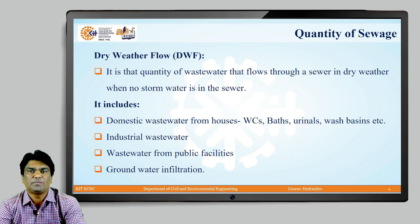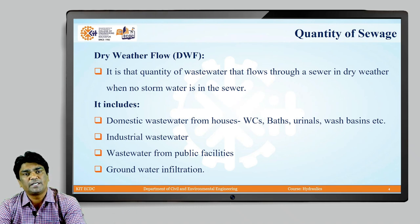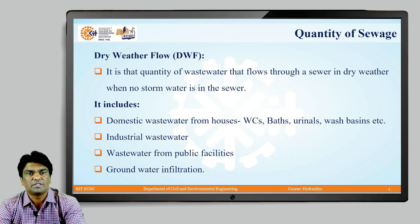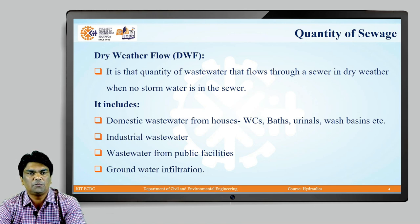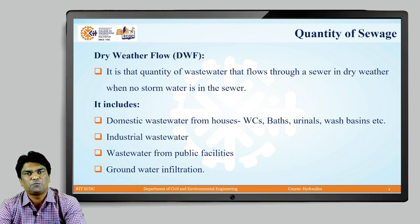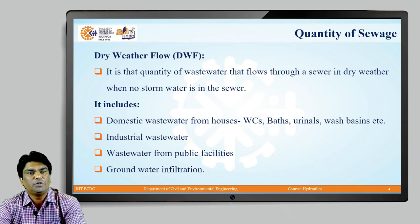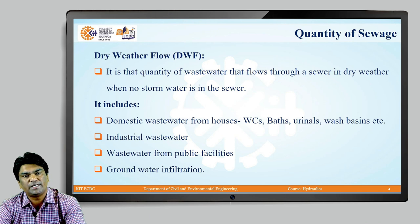Moving to the next part, let us discuss the quantity of sewage — how to quantify it. Sewage is nothing but waste water generated from various sources, and it also includes infiltrated groundwater. There are two key terms: dry weather flow and wet weather flow. Dry weather flow is that quantity of waste water that flows through a sewer in dry weather conditions when no storm water is in the sewer — essentially the sanitary flow.